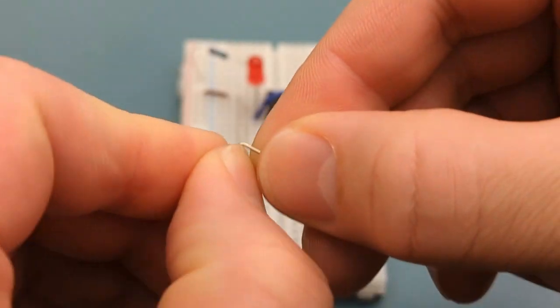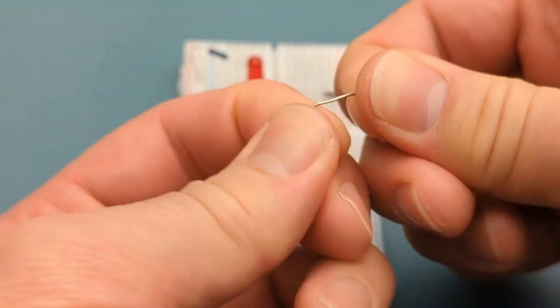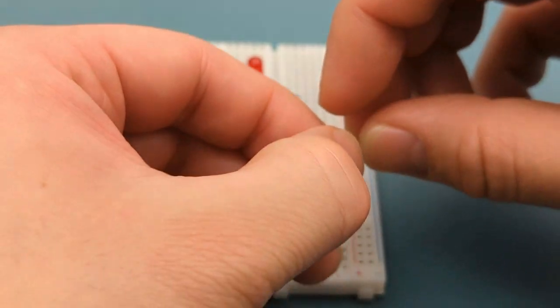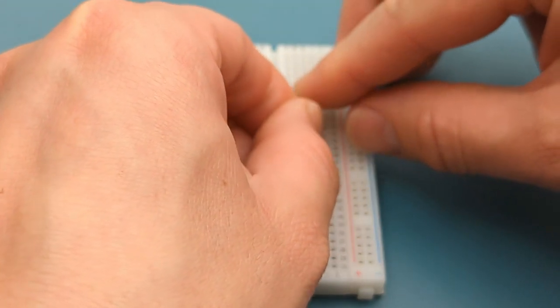Bend the ends of another touch probe. This is the touch probe for the right side. Insert the touch probe into pin 6 or threshold and a few rows below the 555 timer.